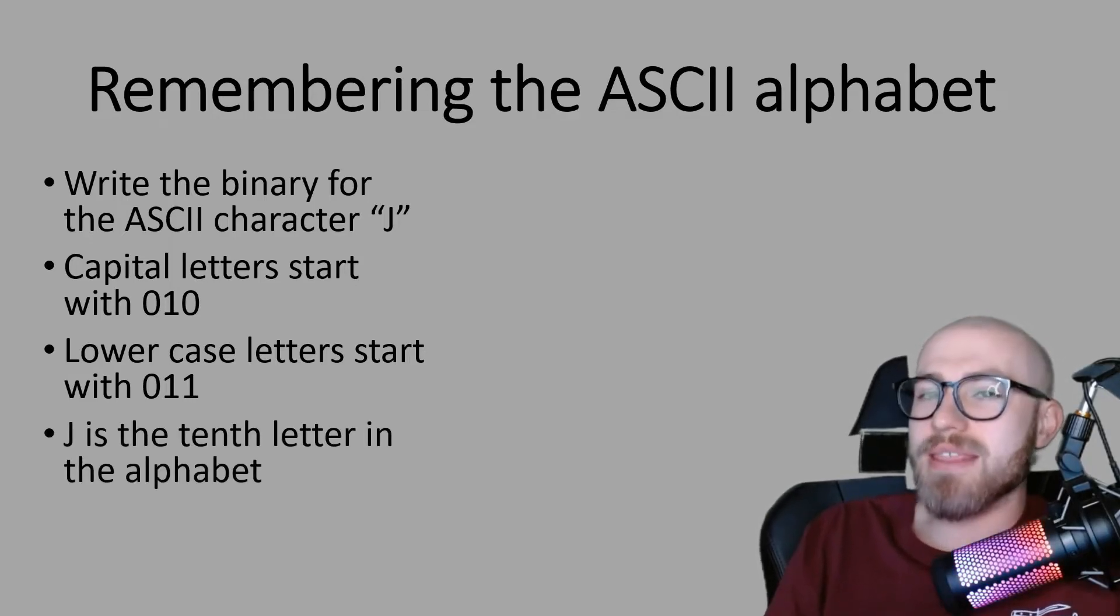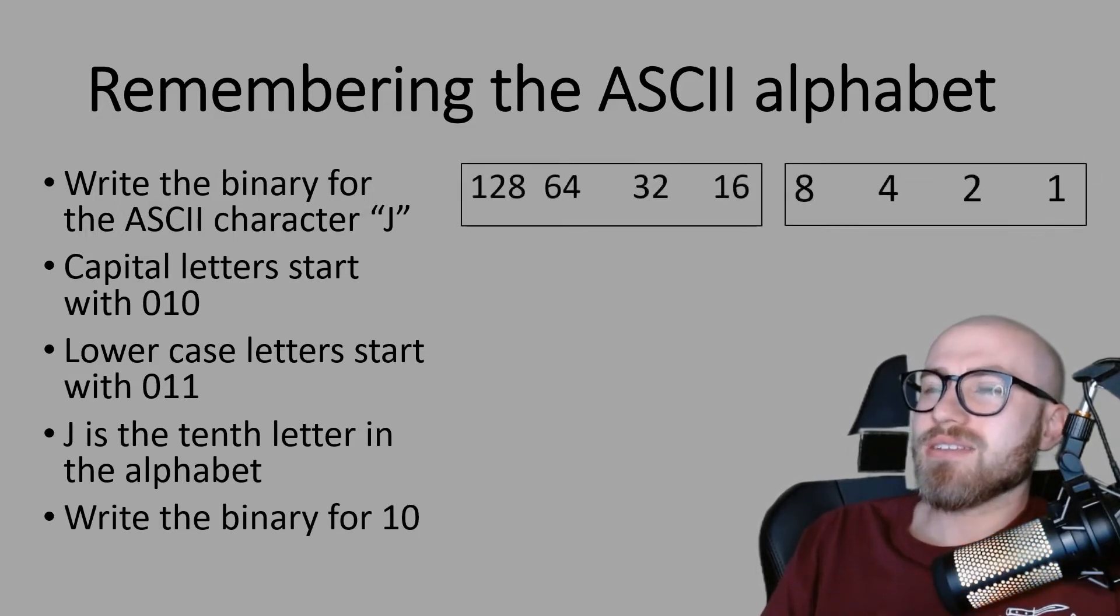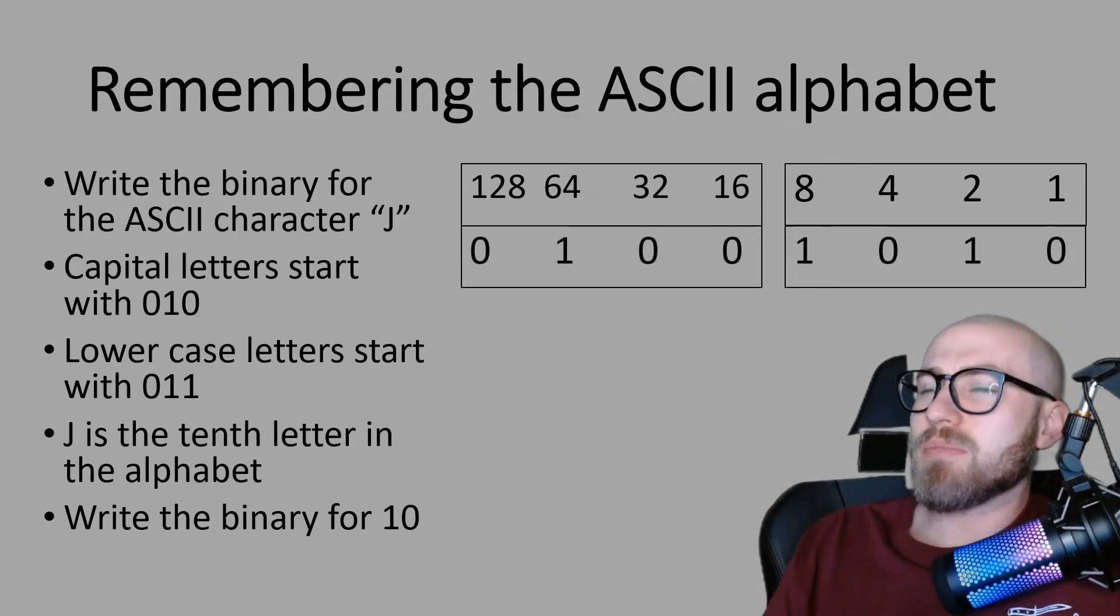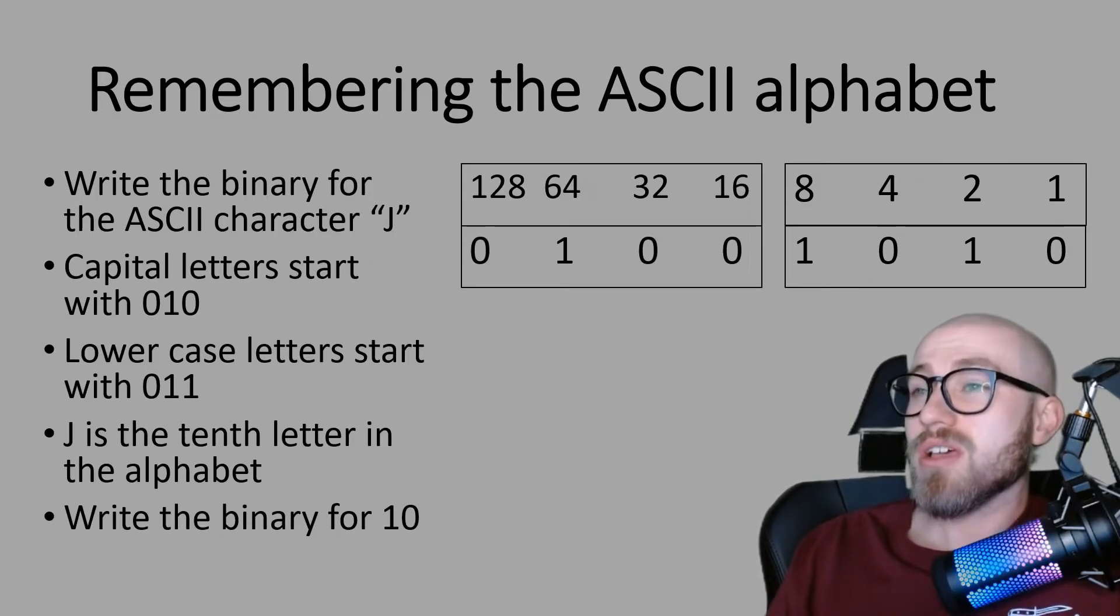So J is the tenth letter of the alphabet so we're going to write the binary for 10. We're going to use our conversion table, at the beginning of it you can see we've got our 010, so 0 in 128, 1 in 64 and 0 in 32. But then the rest of this binary number you just need to make the number 10 in binary where we've got an 8 and we've got a 2. So this is J in ASCII.